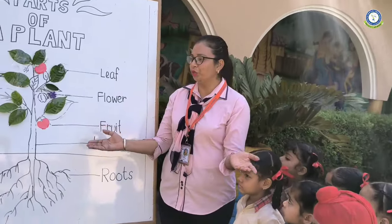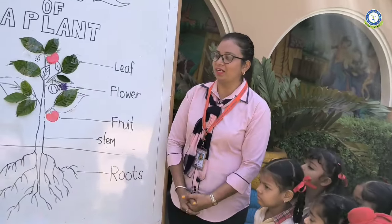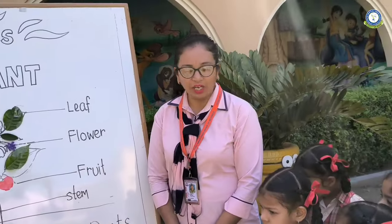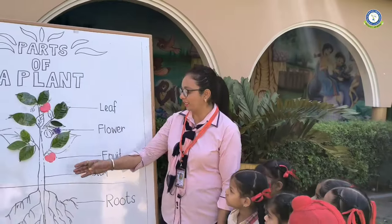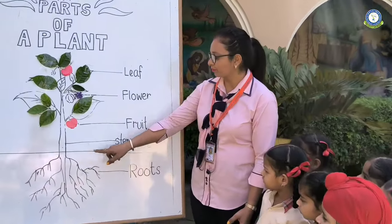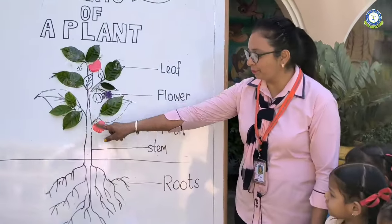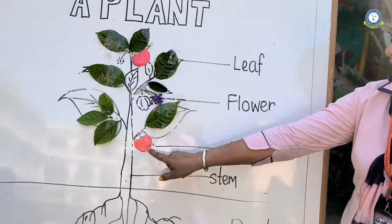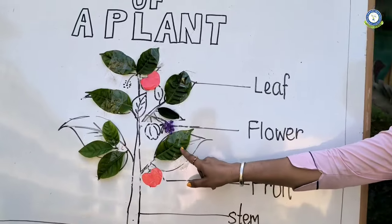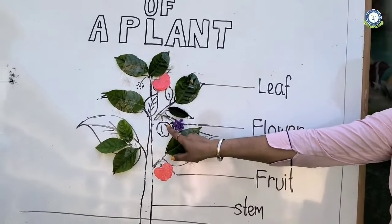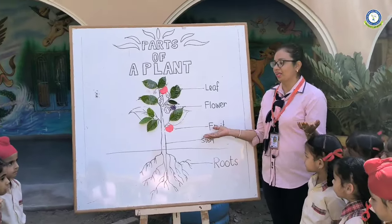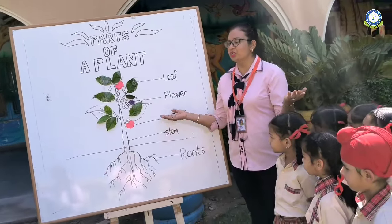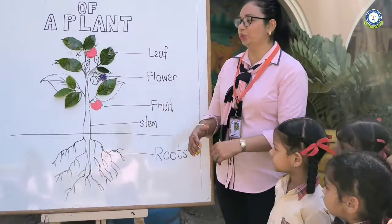Students, do you know plants are our best friends? Now I will tell you the parts of the plants. They are roots, stem, fruit, leaf and flowers. Plants need sunlight, water, soil and air to grow.